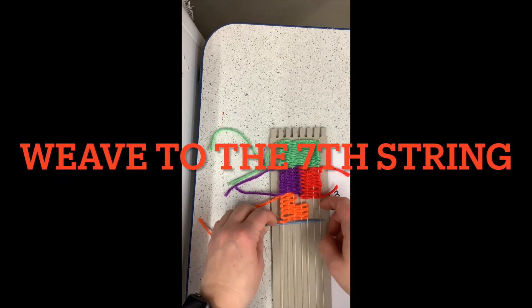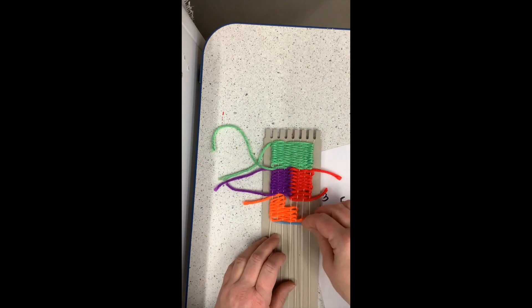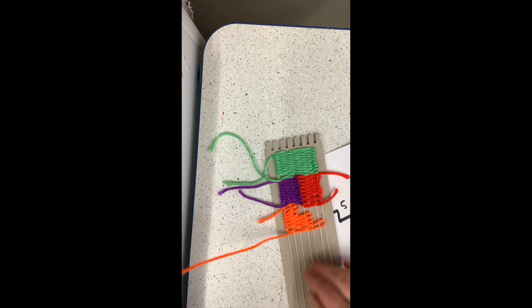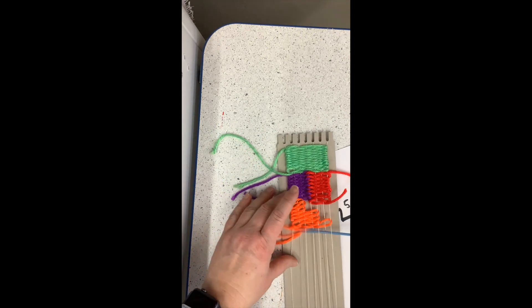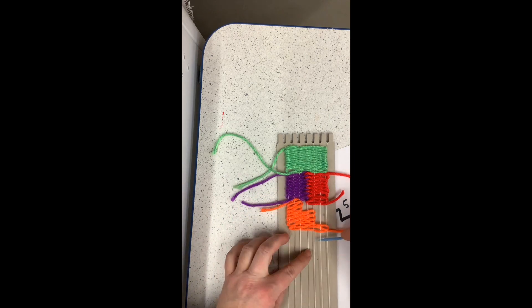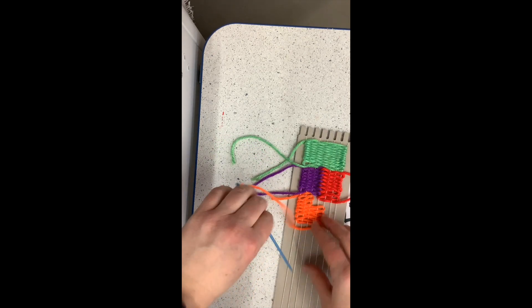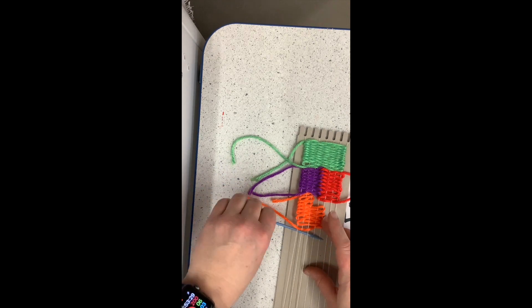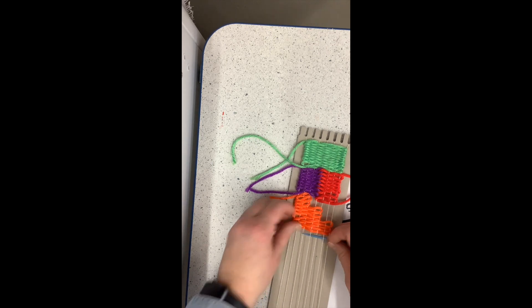Okay, this time I'm going to weave all the way to the seventh row and turn around. I'm just going to weave until I run out of string and then I will get my second color so I can do one more turn back.